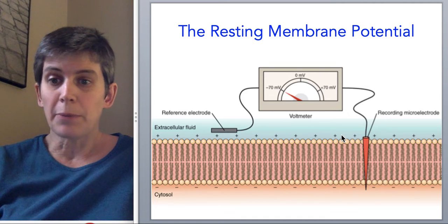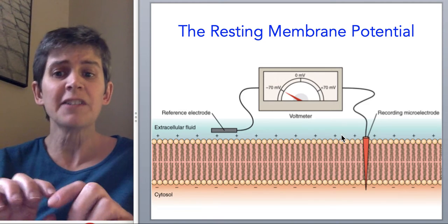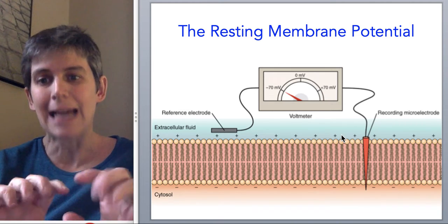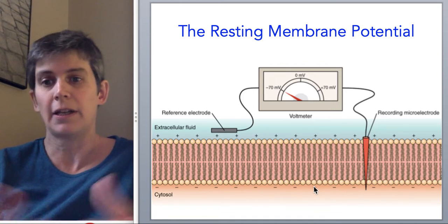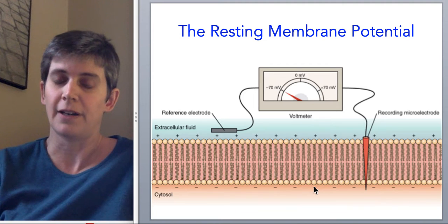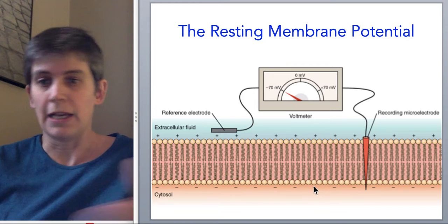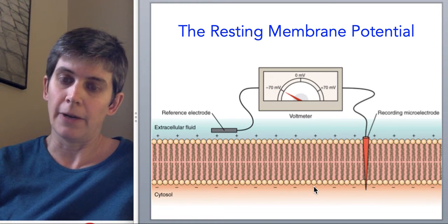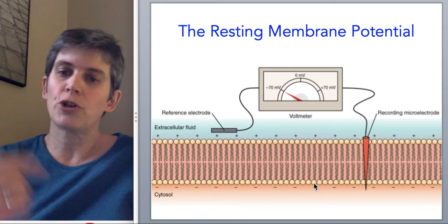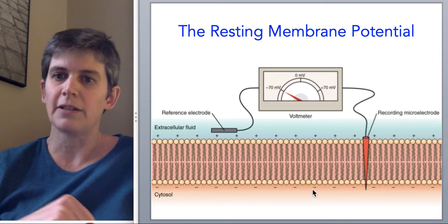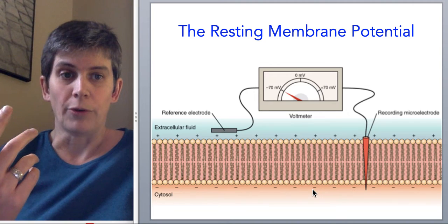This resting membrane potential actually exists only along the cell membrane. It is a property of the cell membrane and only affects things at the cell membrane. You might think that the negative charge would spread throughout the inside of the cell, but the reason that doesn't happen is that this negatively charged state along the inside of the cell membrane is being continuously created, as we'll see.